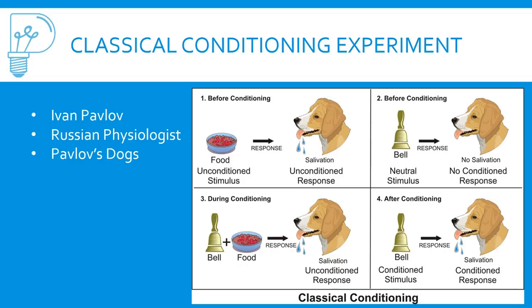Here's an example. Ivan Pavlov, a Russian psychologist, performed the famous Pavlov dog experiment. In step one, they gave food to the dog and measured whether it would salivate — he actually drilled into the dog's cheeks to measure saliva. After showing the dogs enough food, they would salivate. In step two, he rang a bell and found the dogs did not salivate. This is the neutral stimulus with no conditioned response.